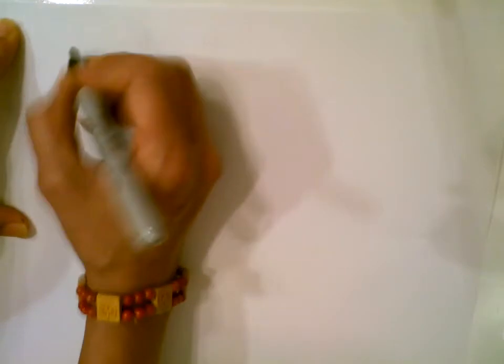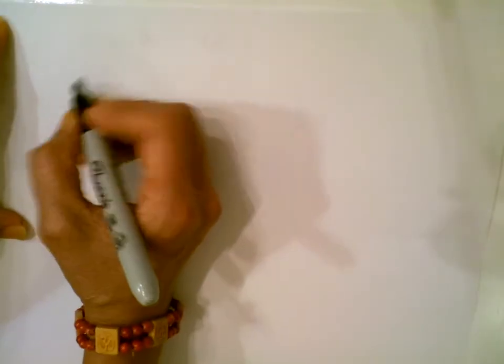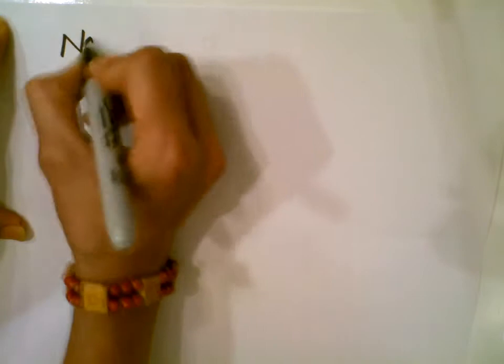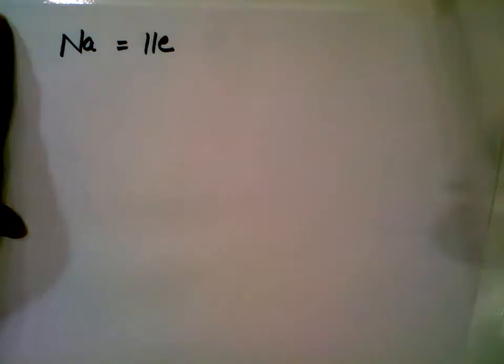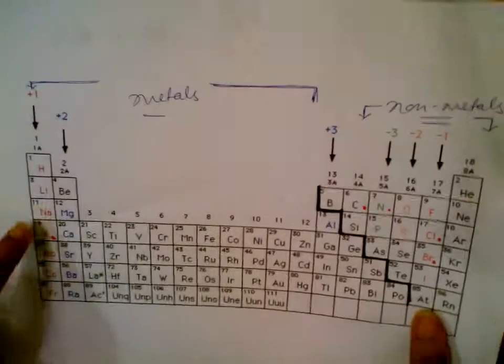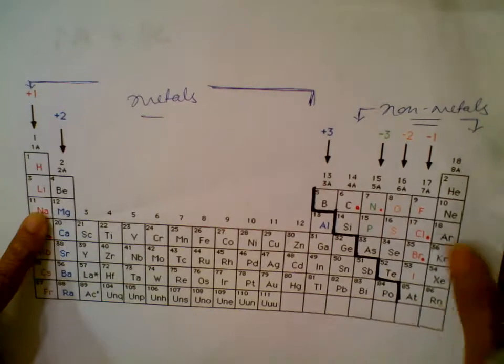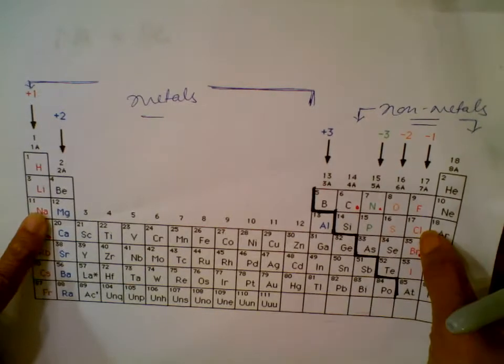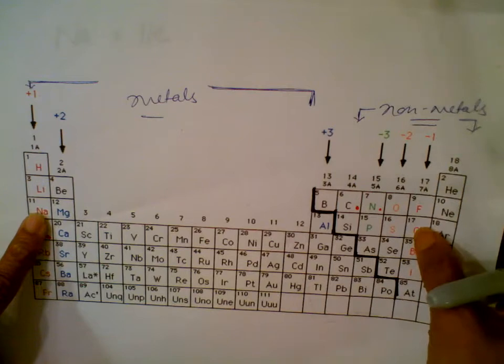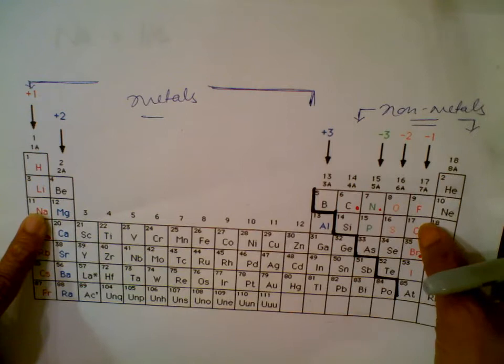Let's work on the formation. Sodium has 11 electrons — you can refer to your periodic table if you've forgotten. We are making a compound between sodium and chlorine. Chlorine belongs to group 7; it has 7 valence electrons but 17 total electrons.